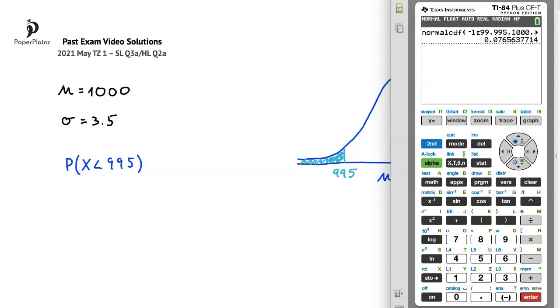Remember that we have to round to three significant figures. Here the third significant figure is 5, while the fourth significant figure is 6. Because of this, we'll round up and get that the probability is 0.0766.